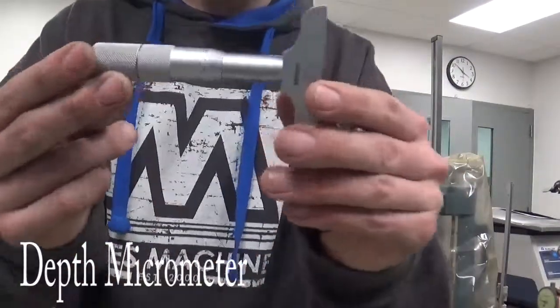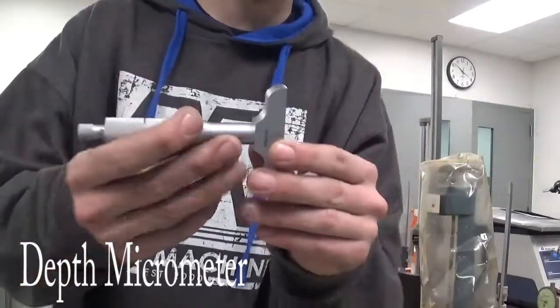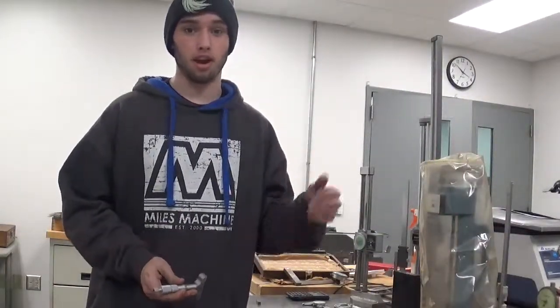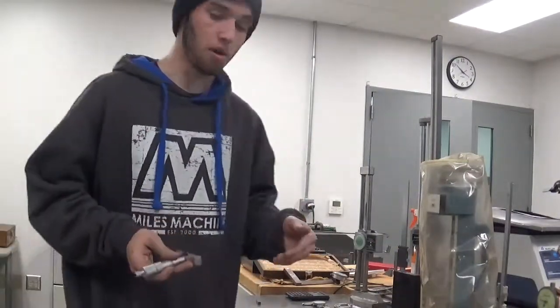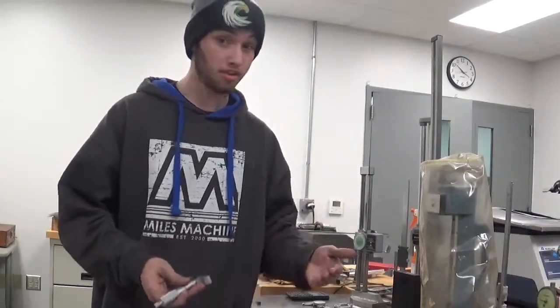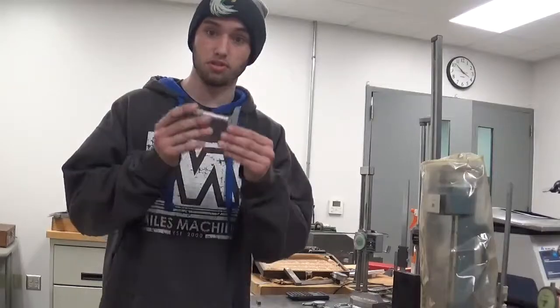In today's lesson we'll be going over how to use a depth micrometer. This is what a depth micrometer looks like. Sometimes in the shop you might hear it called a depth mic or a depth gauge, but the technical term for this is a depth micrometer. You obviously use it to measure the depths of blind holes, steps—there's a lot of things you can use this useful tool for.